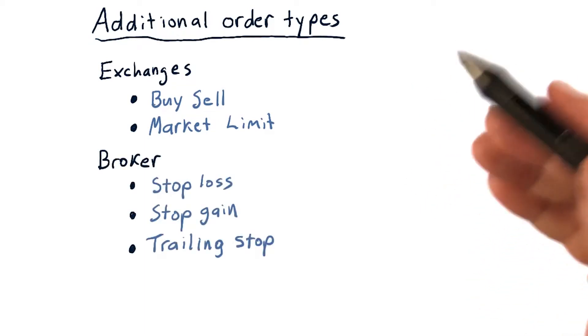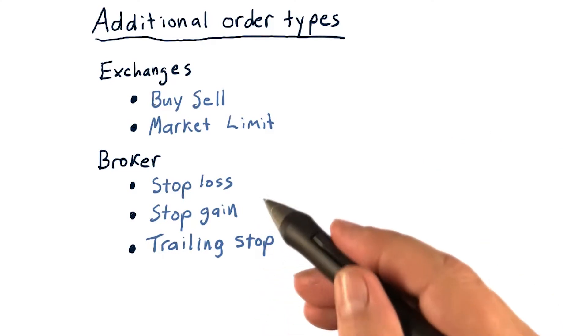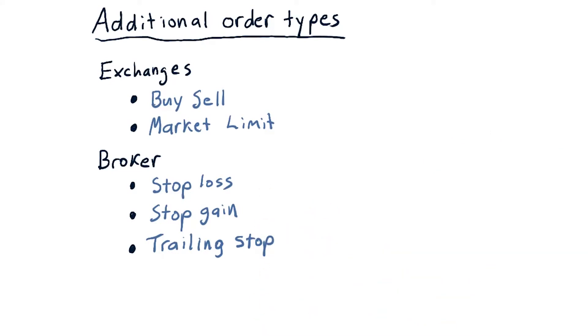The way that works is you enter this order type, and I'll give you a couple examples in just a second. The broker holds that order and watches the market until the conditions that you specified are met, and then when those conditions are met, the broker sends your order to the market accordingly.